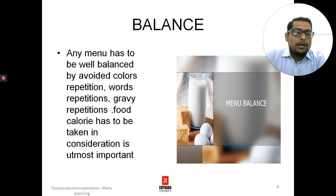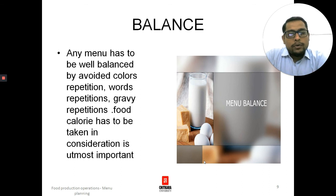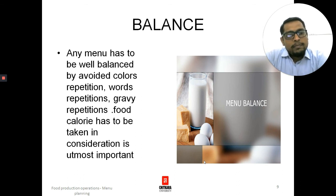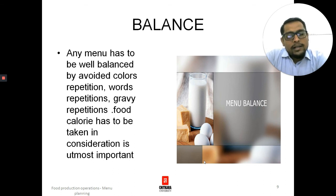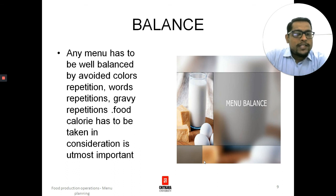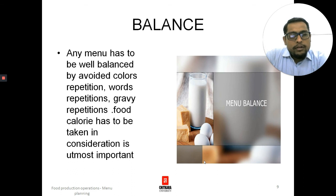Gravy repetition is also an issue — paneer cooked in tomato gravy, chicken cooked in tomato gravy, mushroom cooked in tomato gravy, vegetables cooked in tomato gravy, egg cooked in tomato gravy — that single tomato gravy keeps repeating. The guest is not getting ample choice and will only order one thing. There should be a food calorie section, a salad section, and a separate vegetable and non-vegetable section, creating a well-balanced menu.